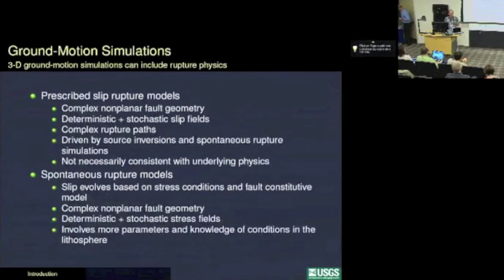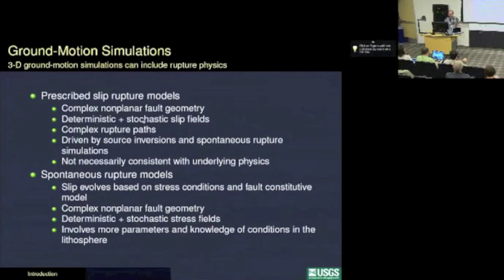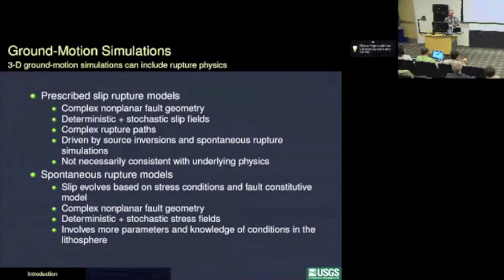Within the ground motion modeling community, there are two basic approaches. One is a purely kinematic approach where you prescribe the slip time history over the fault. You can use complex non-planar geometry, and generally blend deterministic characteristics — such as those from a source inversion — with a stochastic component to roughen up the slip and rupture velocity, to make it more complex and match ground motions in general. The prescribed slip is generally driven by source inversion and, in some cases, spontaneous rupture models to bring in more physics, but there's no enforcement of the physics of a stress drop occurring on the fault.